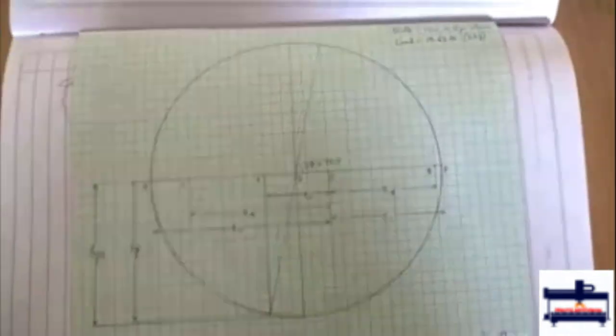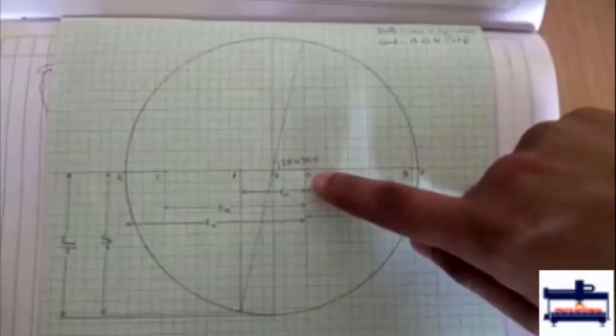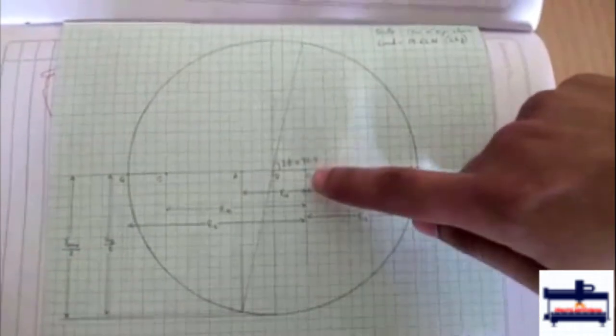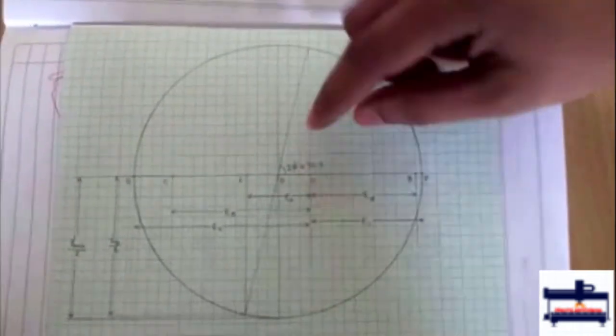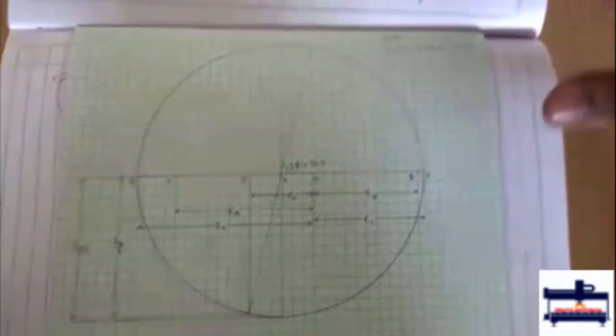So after calculation we have to draw this Mohr circle diagram. So first what we do is we mark point O. From O we draw OD and OD is equal to epsilon a plus epsilon b plus epsilon c by 3.